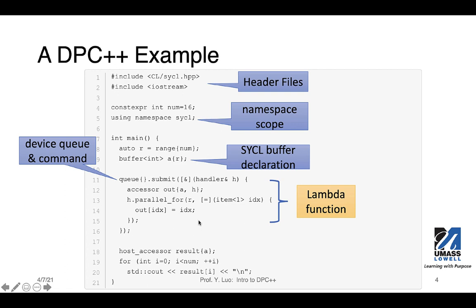Within this lambda function, this is the scope of the command, and we declare an accessor. An accessor is used to create a way to access the buffers. We already declared buffer A, which is an integer buffer. Here, we declare an accessor called 'out' and associate that buffer with this handler. And later, on line 14, we'll be using this 'out' accessor.